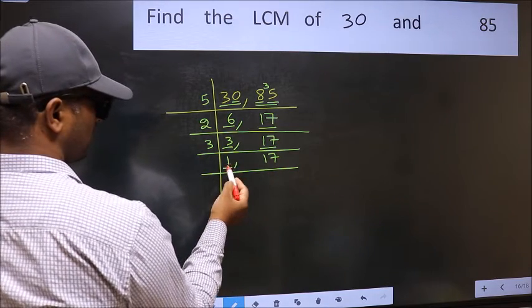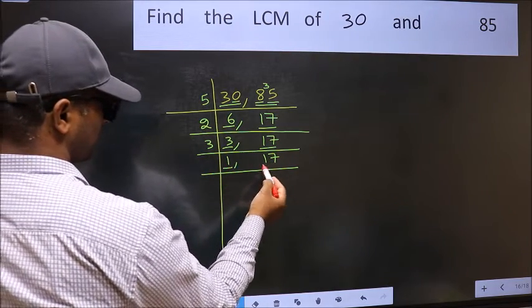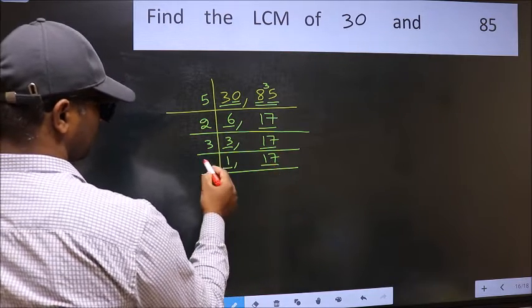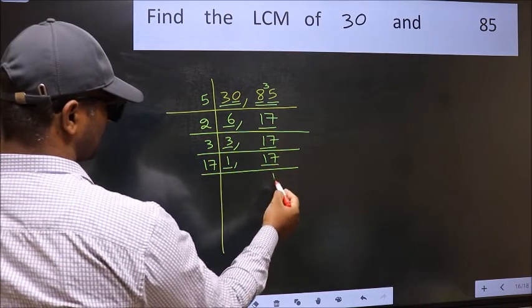Now we got 1 here. So focus on the next number, 17. 17 is a prime number, so 17, 1 is 17.